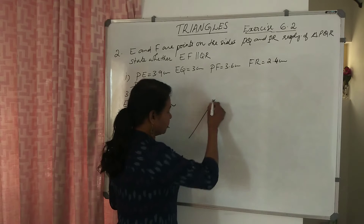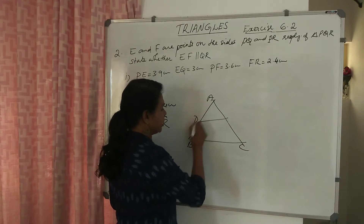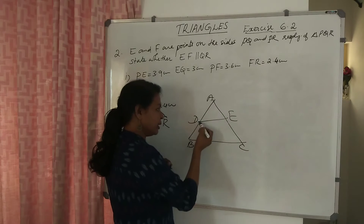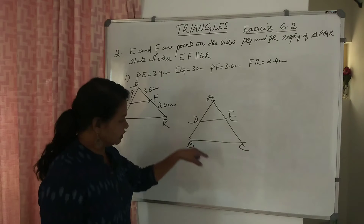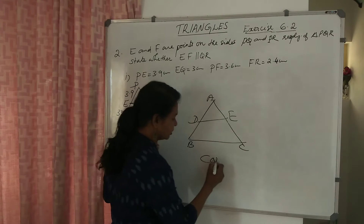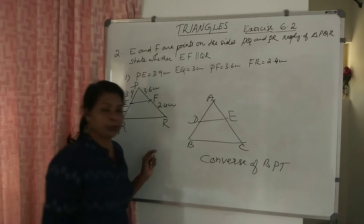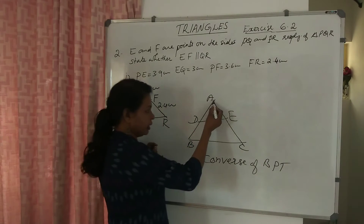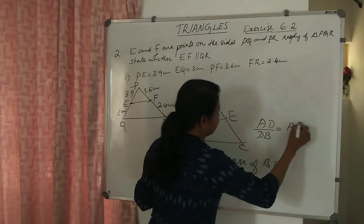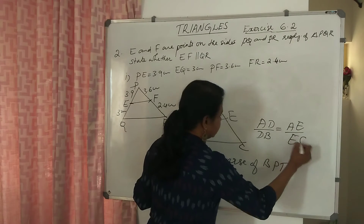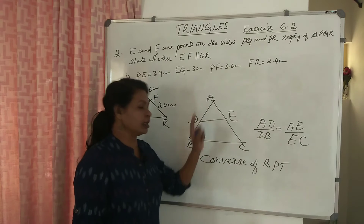We state the Basic Proportionality Theorem: In triangle ABC, if DE is parallel to BC, then AD divided by DB is equal to AE divided by EC. Now, the Converse of BPT: if AD divided by DB is equal to AE divided by EC, then DE is parallel to BC. That is the converse.